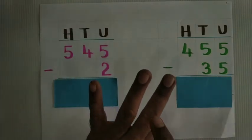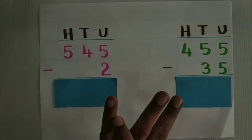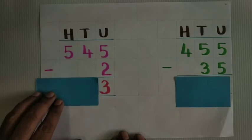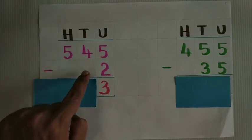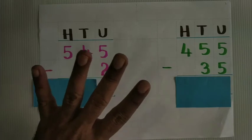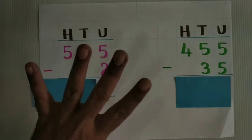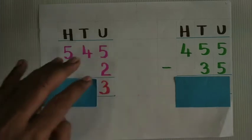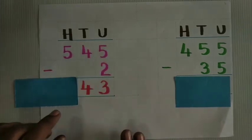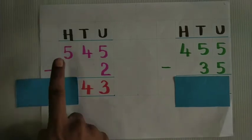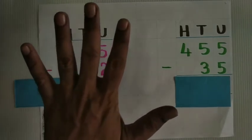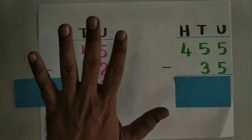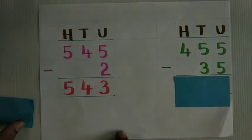4 tenths minus 0 — nothing to take out, so 4 will be left. 5 hundredths minus 0 — nothing, so 5 hundredths remain.